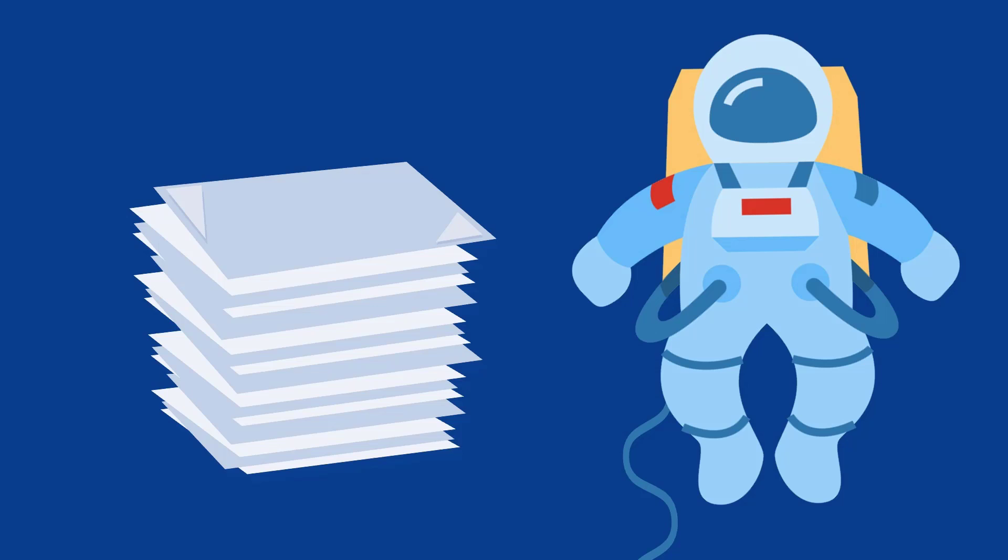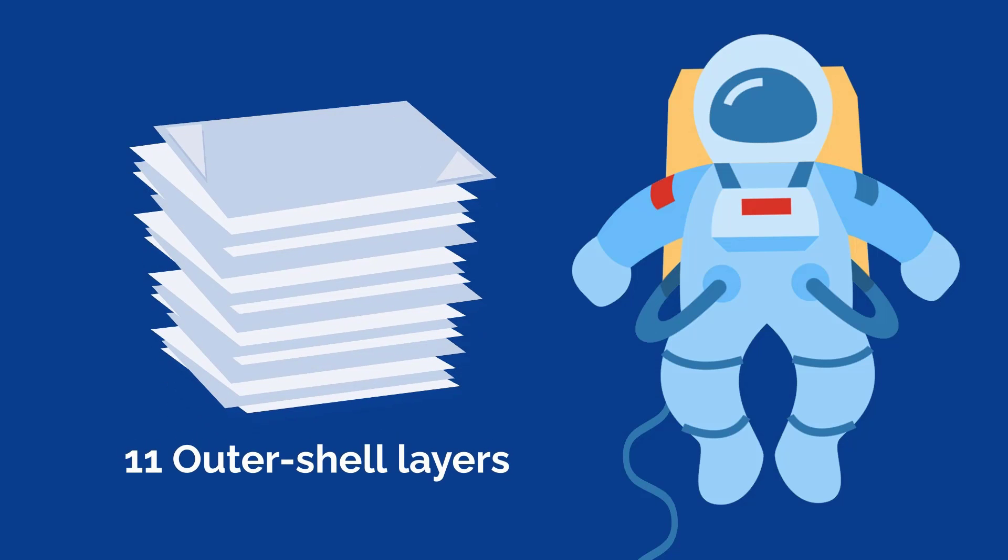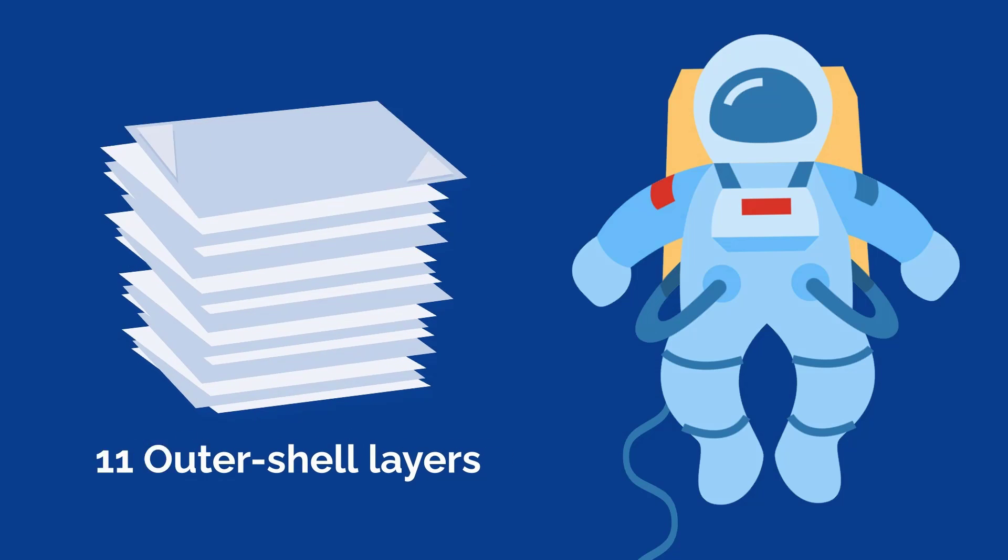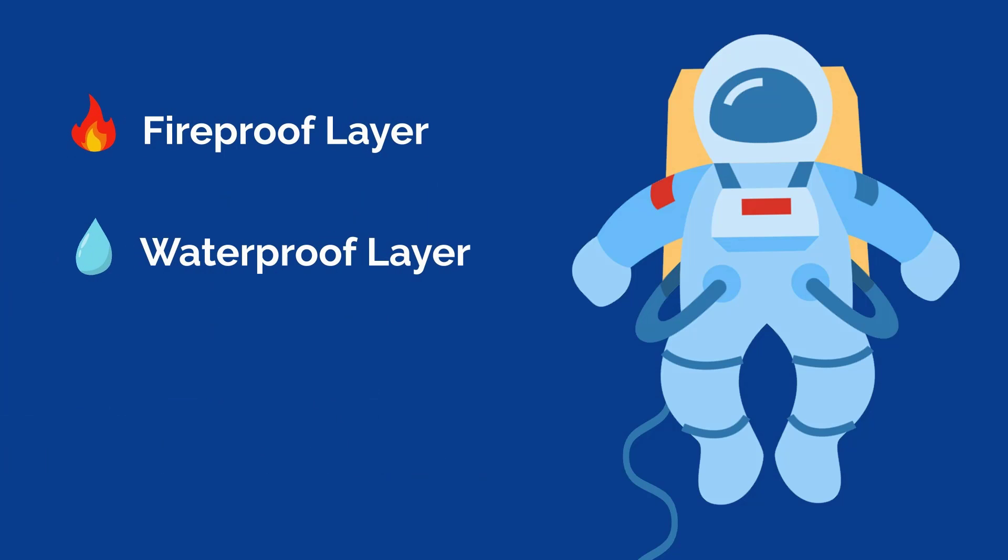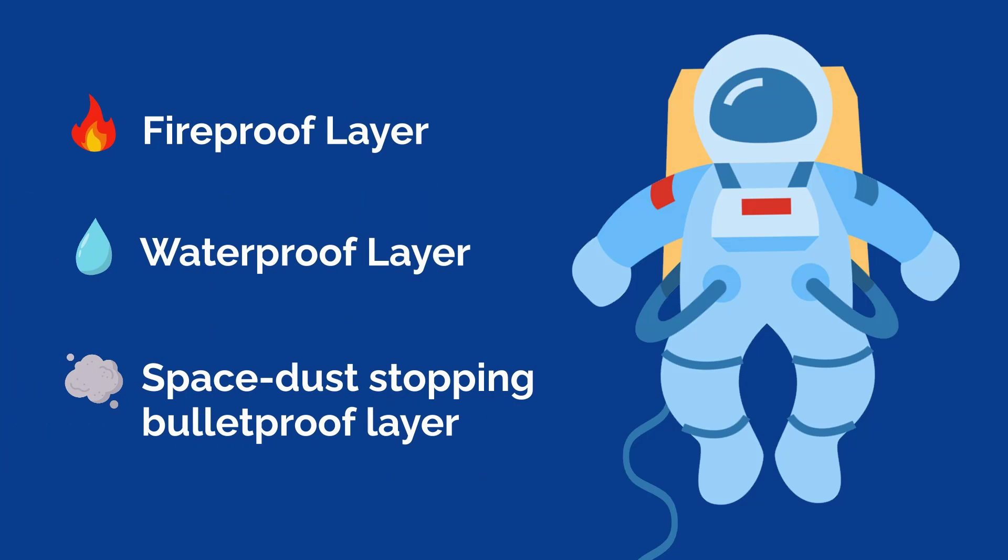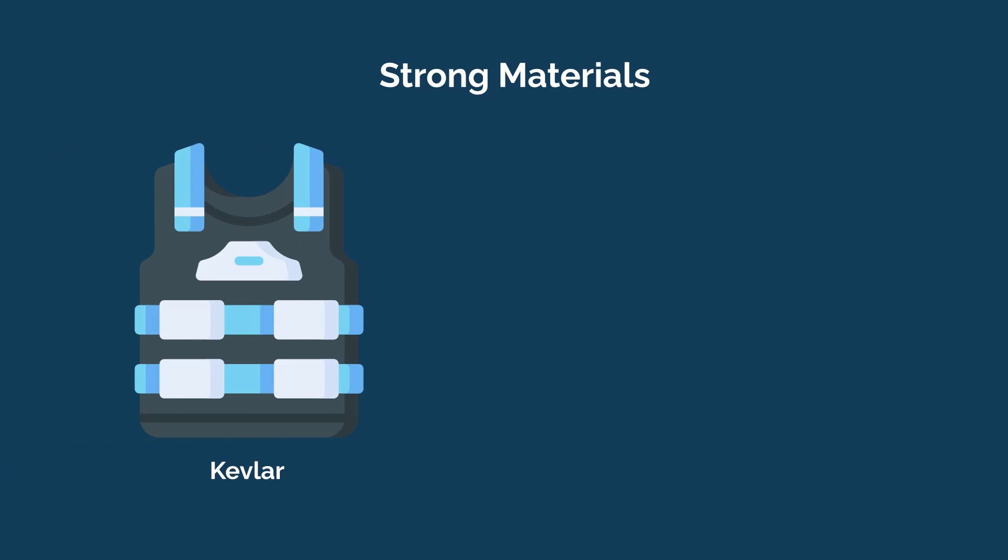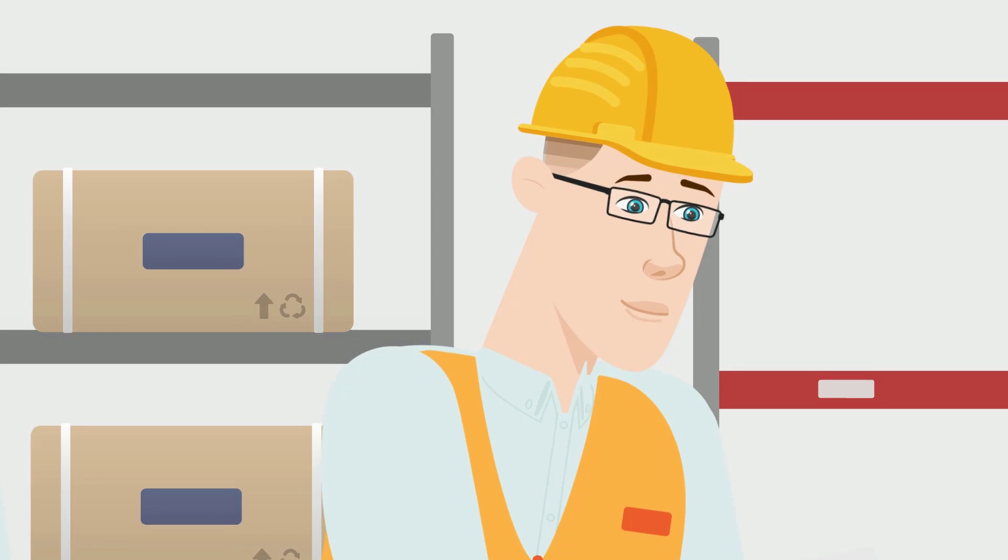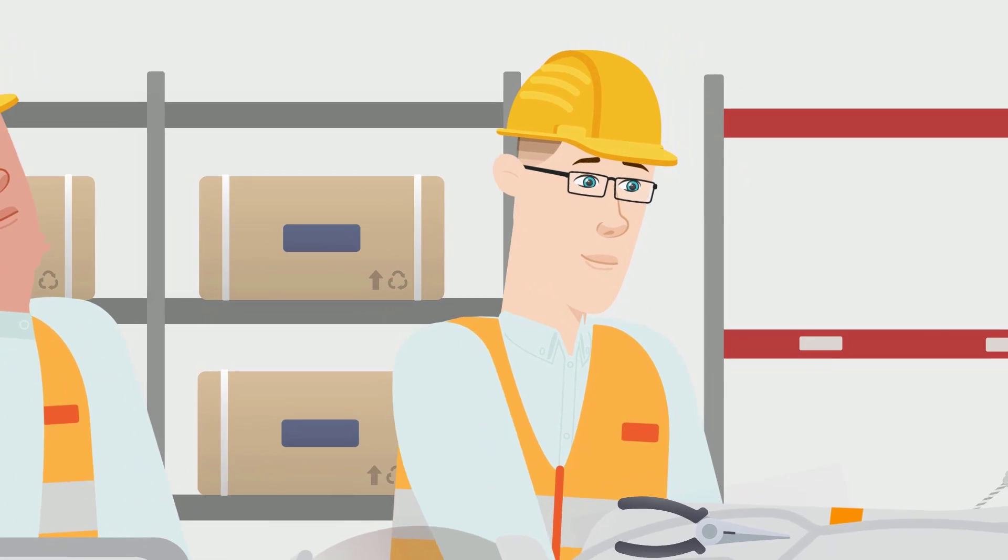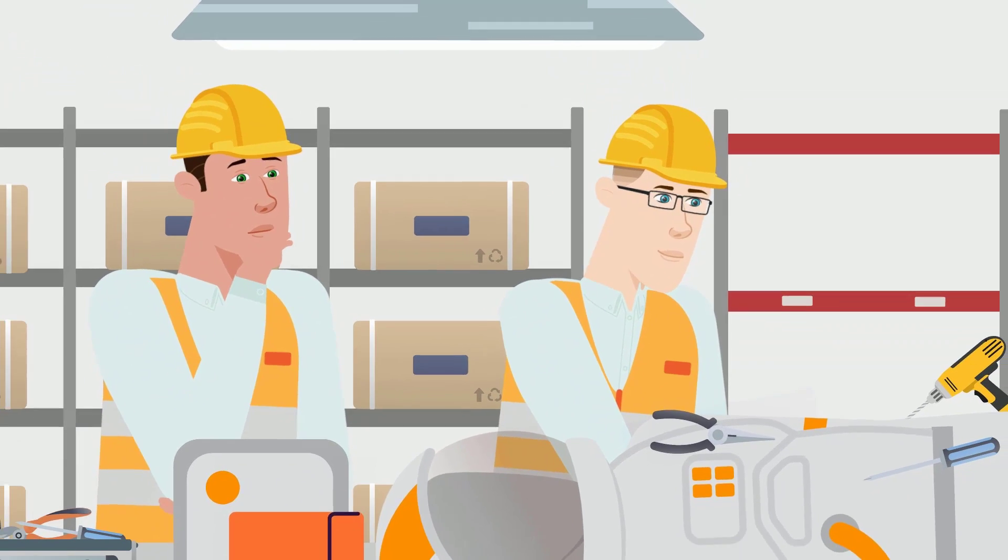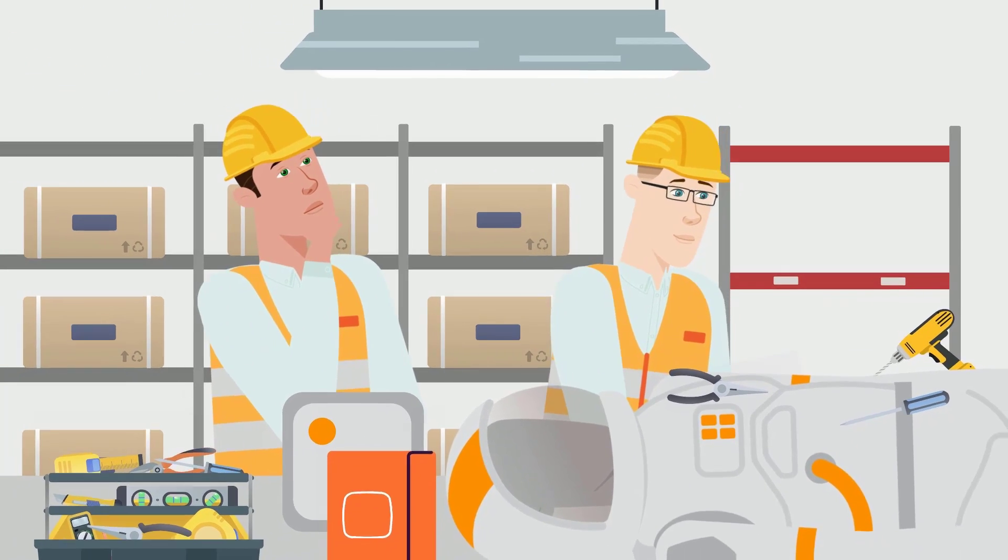With a total of 11 outer shell layers: 5 for temperature regulation, a fireproof layer, a waterproof layer, and a space dust-stopping bulletproof layer, made of strong materials like Kevlar and Nextil. Now that another surely lethal encounter has been brushed off by the innovative mechanical and materials engineering of the outer shell layers, our astronaut is able to safely continue.